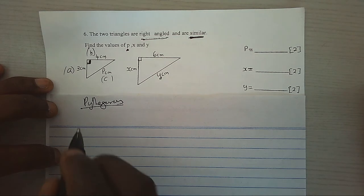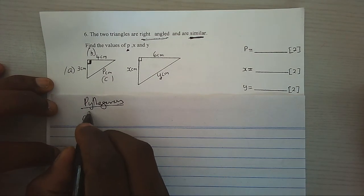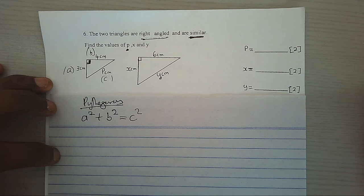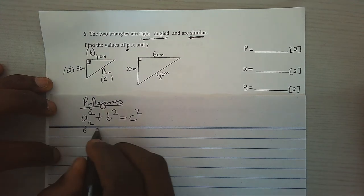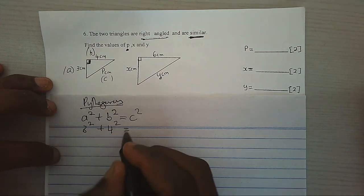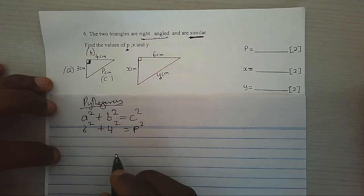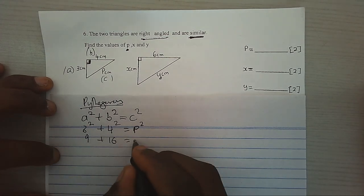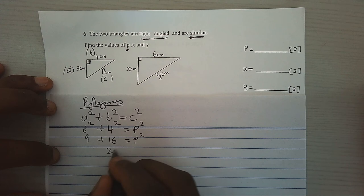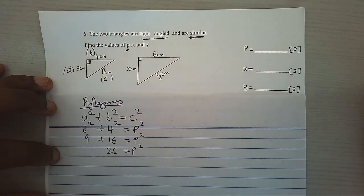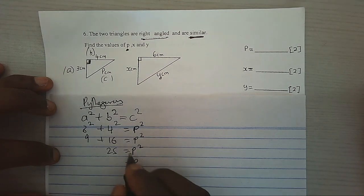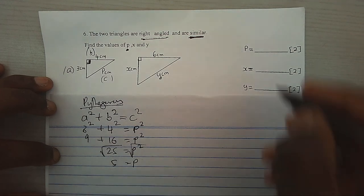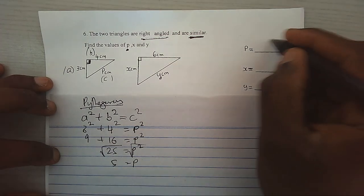Now, the formula is A squared plus B squared gives us C squared. That is, 3 squared plus 4 squared gives us P squared. 9 plus 16 gives us P squared. 25 gives us P squared. When we find the square root, it will give us 5. Now, we know that P is 5.